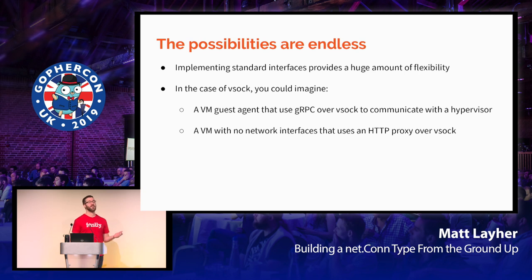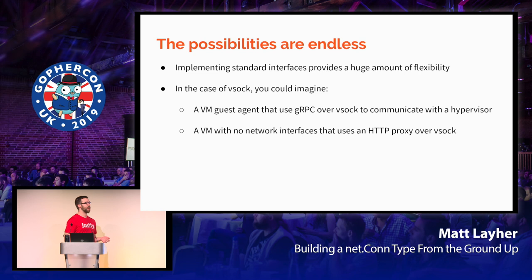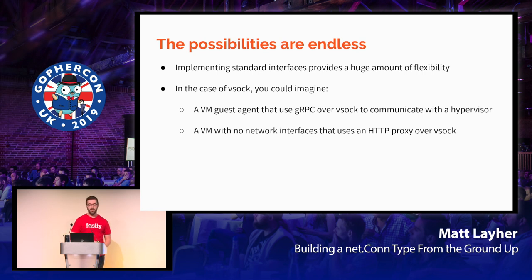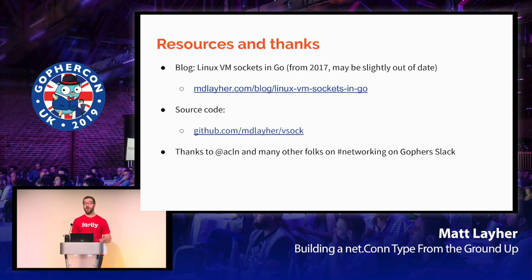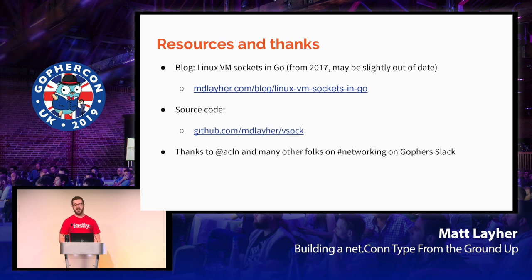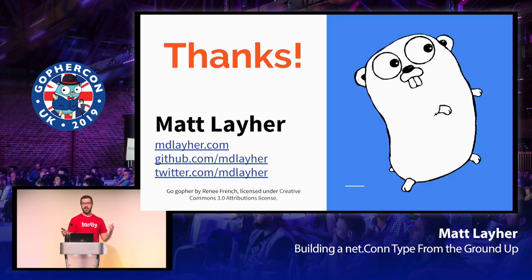In summary, the possibilities really are kind of endless, and implementing standard interfaces in the Go standard library can provide great flexibility in your applications. For VSOCK specifically, interesting use cases include a virtual machine guest agent communicating to a hypervisor over gRPC as a cloud metadata service, or a virtual machine without a virtual network interface communicating with a local proxy over HTTP, with the proxy forwarding over VSOCK to the hypervisor — giving you access to the outside world without a true network interface. I wrote a blog post called Linux VM Sockets and Go if you're interested. Check out my VSOCK package on GitHub, and thanks to ACLN and the folks in the networking channel on the Gophers Slack. That's all — thank you for your time.